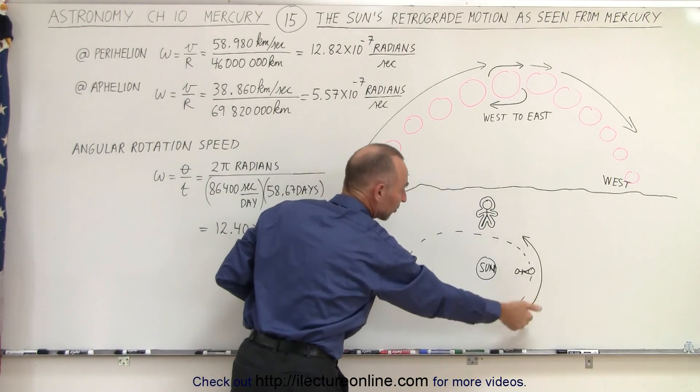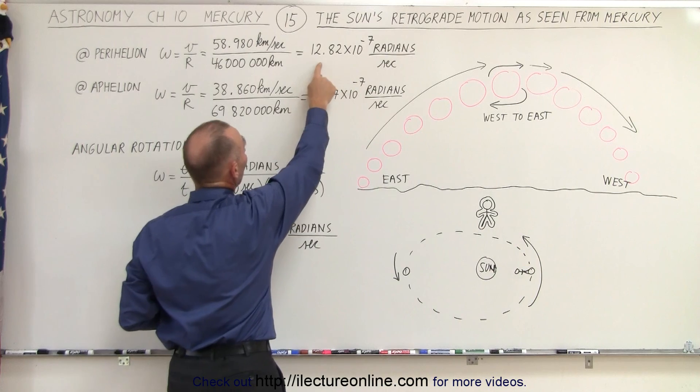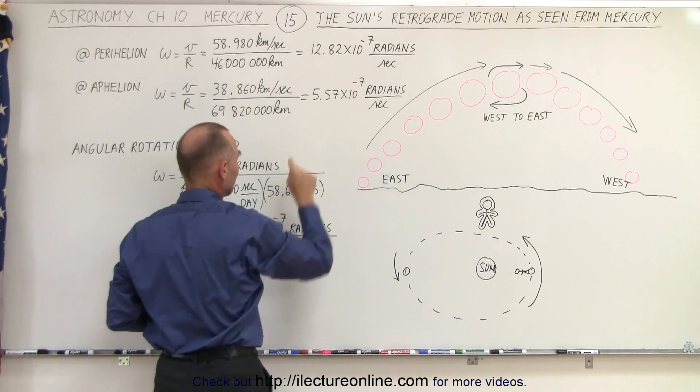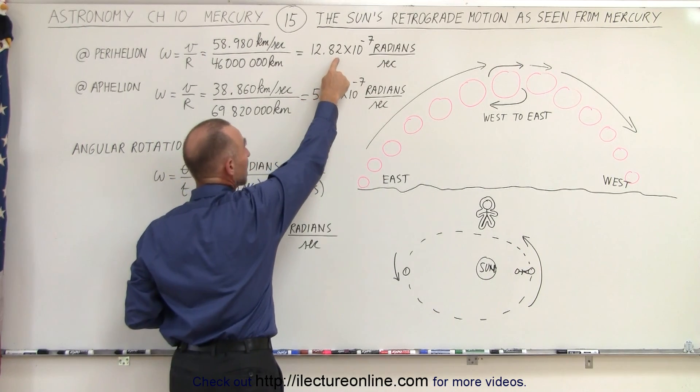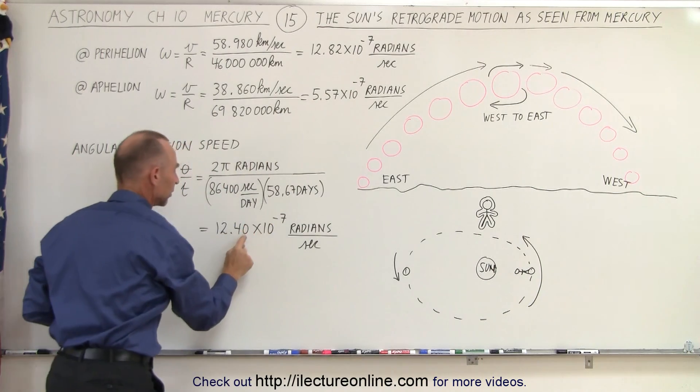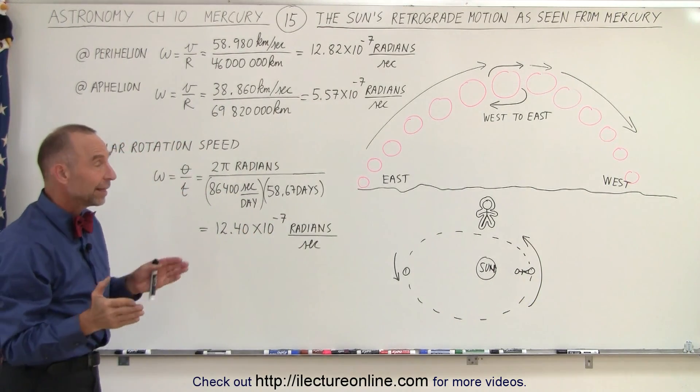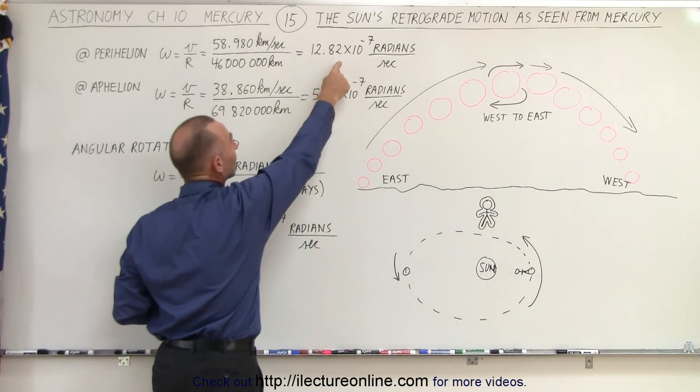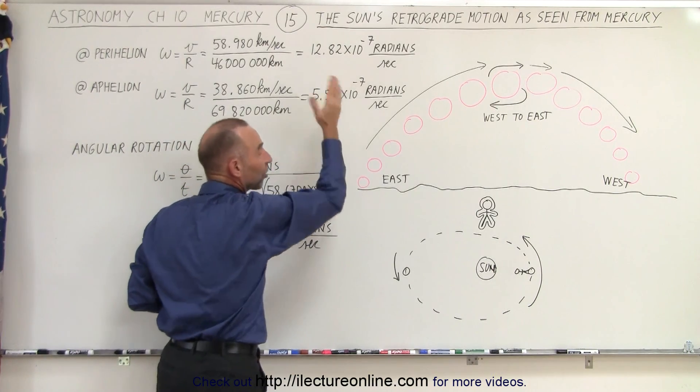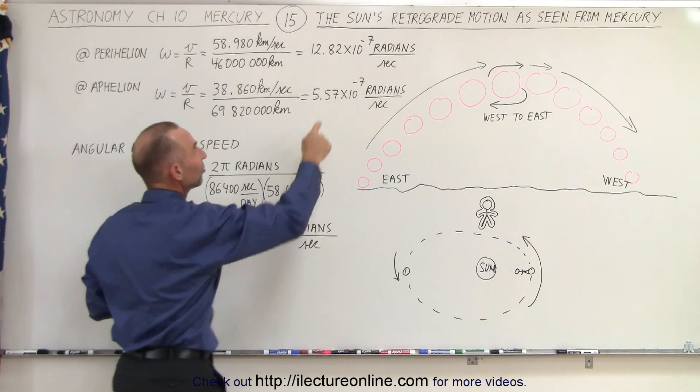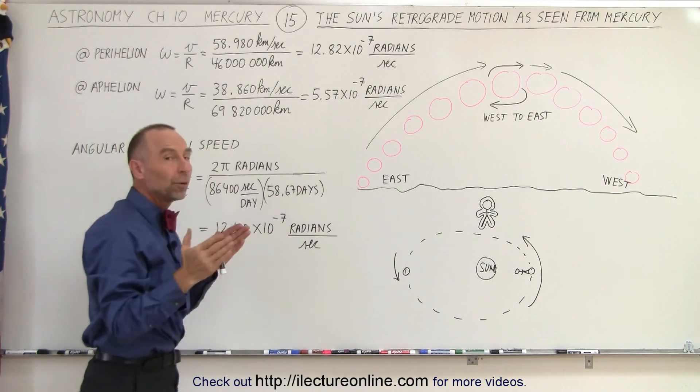Because of its faster velocity at perihelion, it has a much higher angular velocity. In fact, the angular velocity here is greater than the angular velocity due to its rotational motion, which means that this becomes the predominant effect on where the Sun's position will be. If this is larger than this, the Sun will begin to appear to move in the opposite direction.